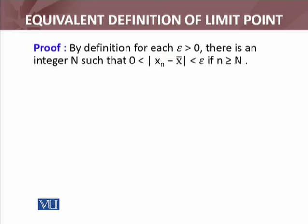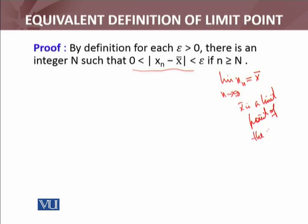Let's see the proof of this statement. By definition, for each epsilon greater than zero there is an integer N such that |xn − x̄| ≤ epsilon for n ≥ N. This means lim(xn) as n → ∞ equals x̄. I have to show that this x̄ is a limit point of the set S. I have taken the convergent sequence in S and I will show that its limit x̄ is a limit point of S.